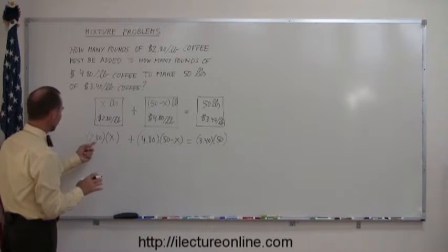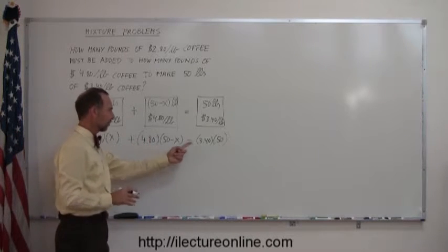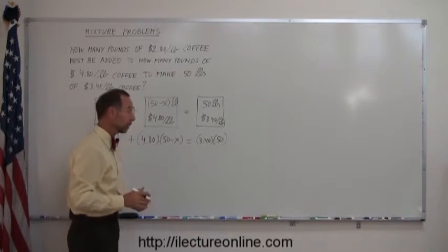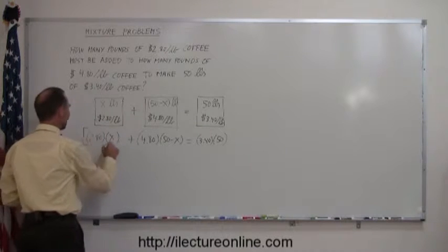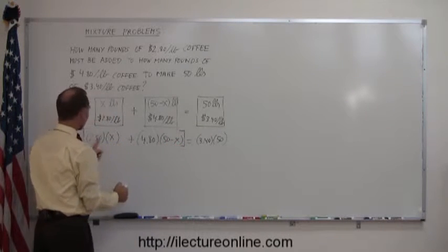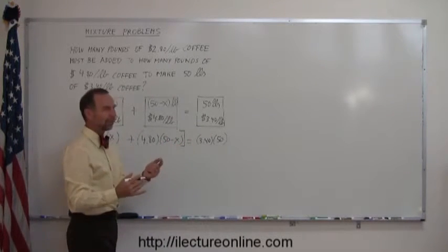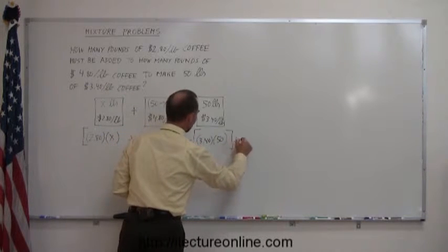Now you say, well wait a minute, I see two decimal places here, two decimal places there, two decimal places there. Why are you only multiplying times 10? Not a problem, because in each case, the last decimal place is a 0, so we don't have to multiply that. We can simply say,